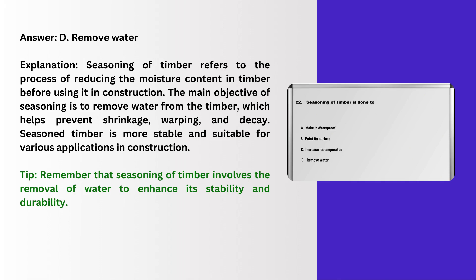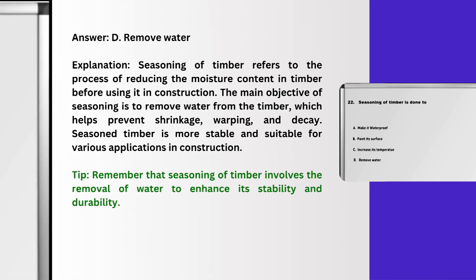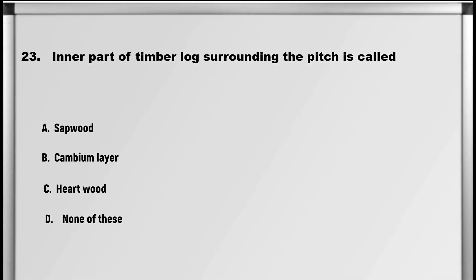Explanation: Seasoning of timber refers to the process of reducing the moisture content in timber before using it in construction. The main objective of seasoning is to remove water from the timber, which helps prevent shrinkage, warping, and decay. Seasoned timber is more stable and suitable for various applications in construction. Tip: remember that seasoning of timber involves the removal of water to enhance its stability and durability.